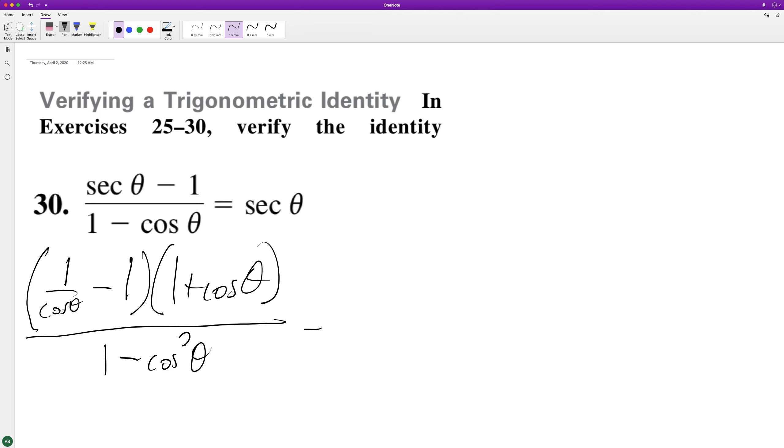And when these multiply together on top, we get 1 over cosine theta minus 1 plus 1 minus 1 minus cosine theta over, and then convert this into sine squared theta.